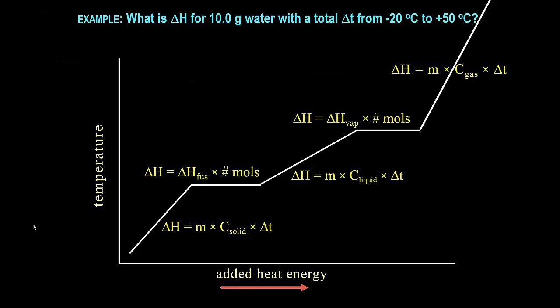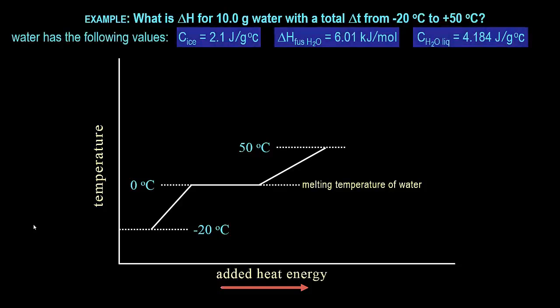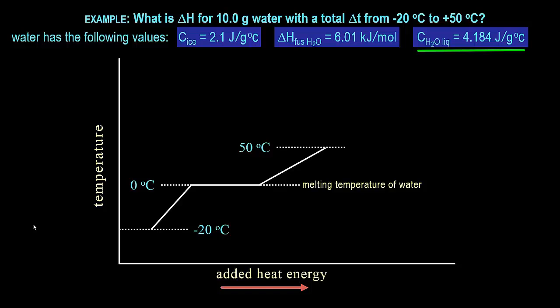What is the total enthalpy change for 10.0 grams of water in which the temperature changes from negative 20°C to positive 50°C? Since ice melts at 0 degrees, we are starting with solid water at negative 20, which will heat to melting, then melt, and then heat to plus 50. The values we need are the specific heat of ice, the heat of fusion giving the energy needed to melt one mole of solid water, and the specific heat of liquid water. These values would either be provided or can easily be found in your textbook.